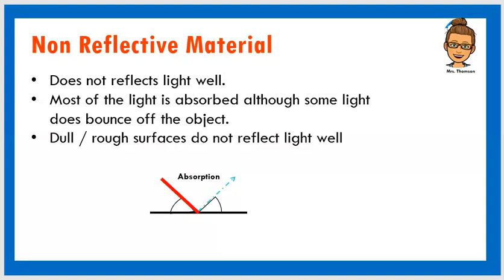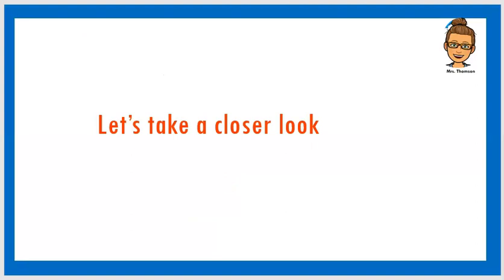And when we look at that material, we realize that those tend to have rough surfaces, unlike the reflective material that have shiny surfaces. Okay, so let's take a closer look and look at some examples of reflective and non-reflective materials. There are items here, so let's take a look.